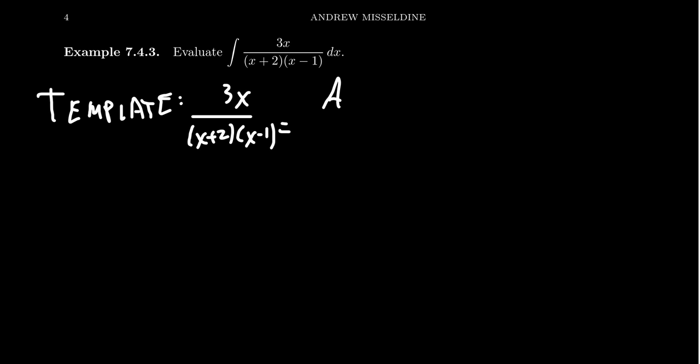It'll look like A over x+2 plus B over x-1. You have to have a partial fraction for each and every factor that shows up in the denominator. And as these are proper fractions, the numerator has to be smaller than the denominator. Linear factors mean the numerators have to be constants.